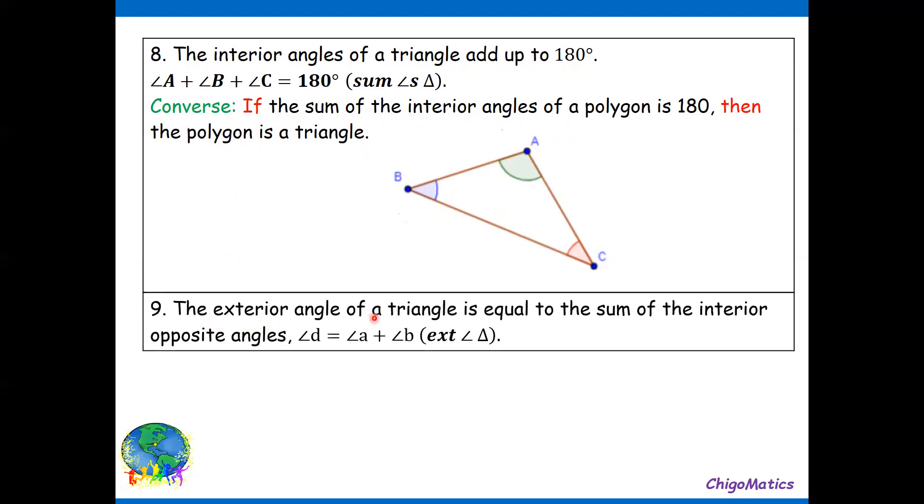Number nine, the exterior angle of a triangle is equal to the sum of the interior opposite angles. You can see this is the exterior angle D, the interior opposite A and B. So we are saying D is equal to the sum of the opposite interior angles.